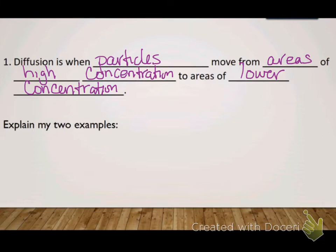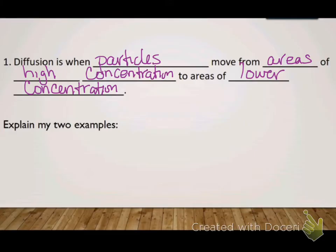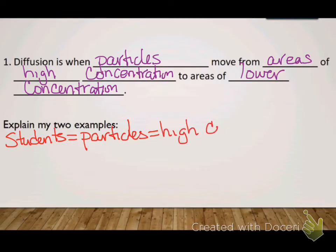For example, if I made you all stand in the corner of my room by the window and you were all really close together — shoulder to shoulder — and then I spread you out through the whole room, that would be diffusion. Where you were all standing shoulder to shoulder touching, that would be the high concentration. After I moved you all throughout the whole entire room — all the way to the door, the front, back, and sides — that's moving from high concentration to low concentration; the room was the low concentration.